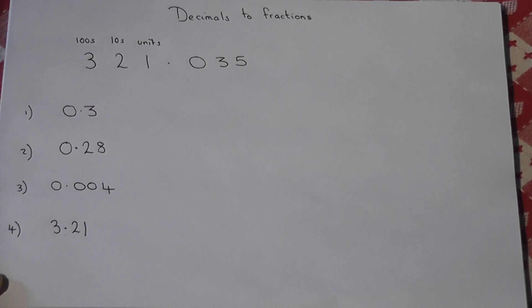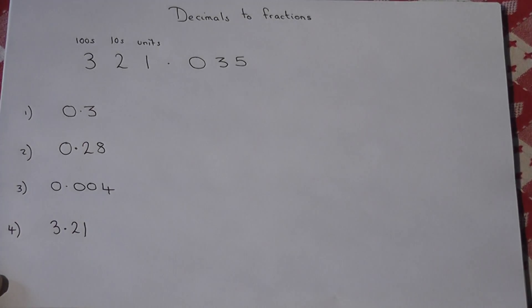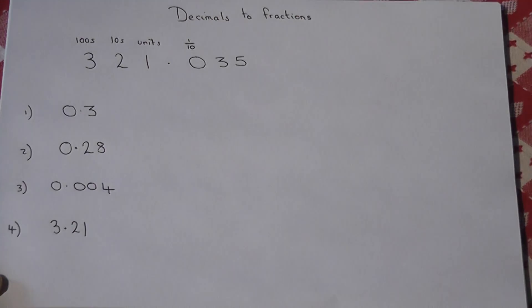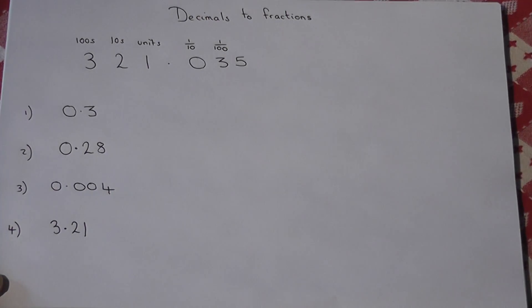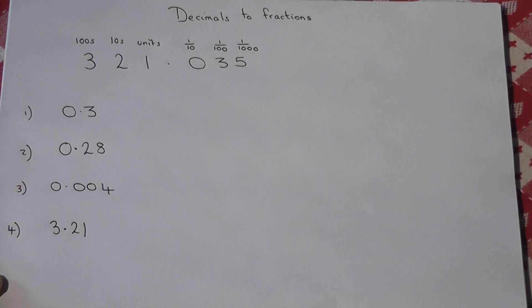In a similar way, the decimal part also does. So we've got hundreds, tens and units. The first column you come to is tenths. Then the next column you come to is hundredths. And the third column is thousandths. And so on and so forth.